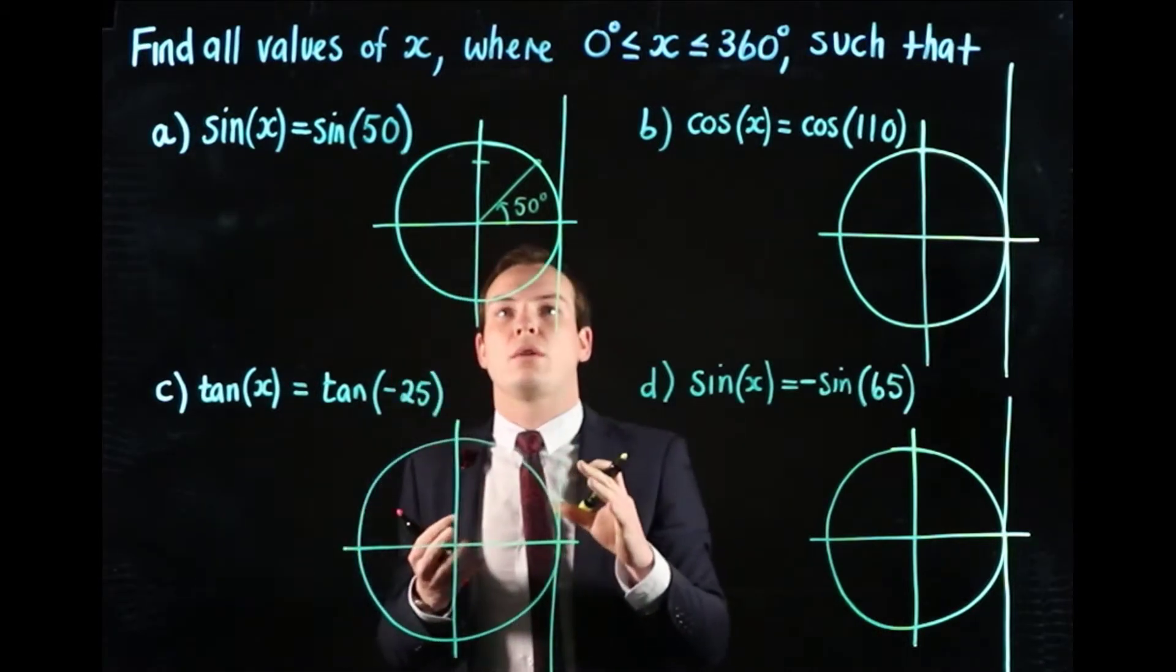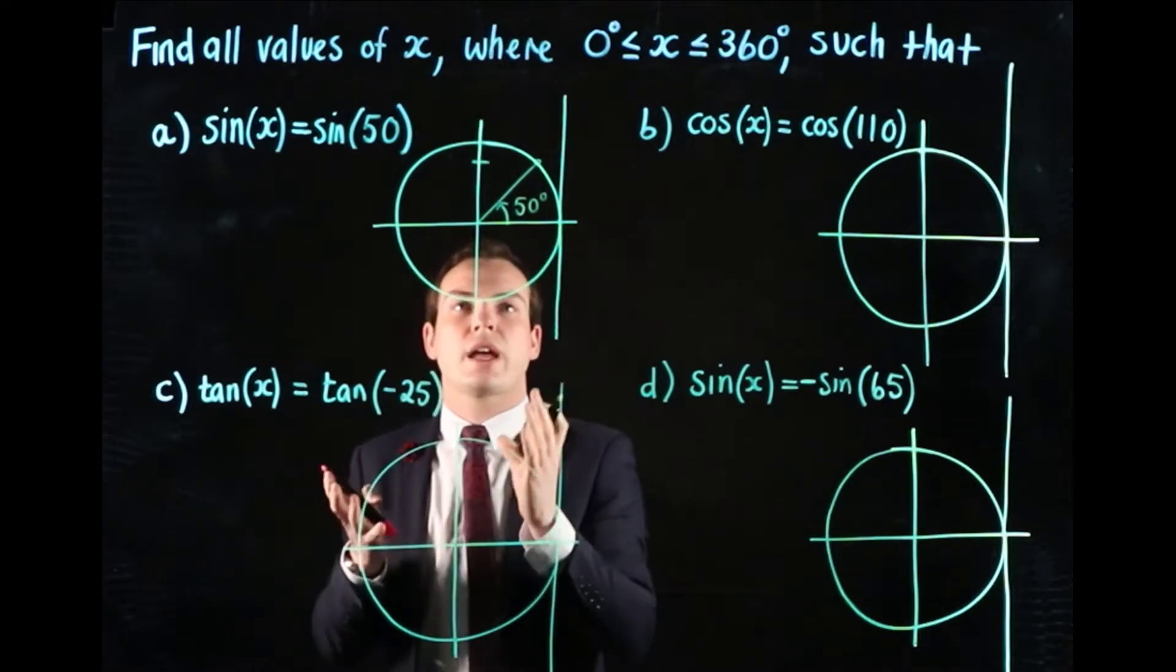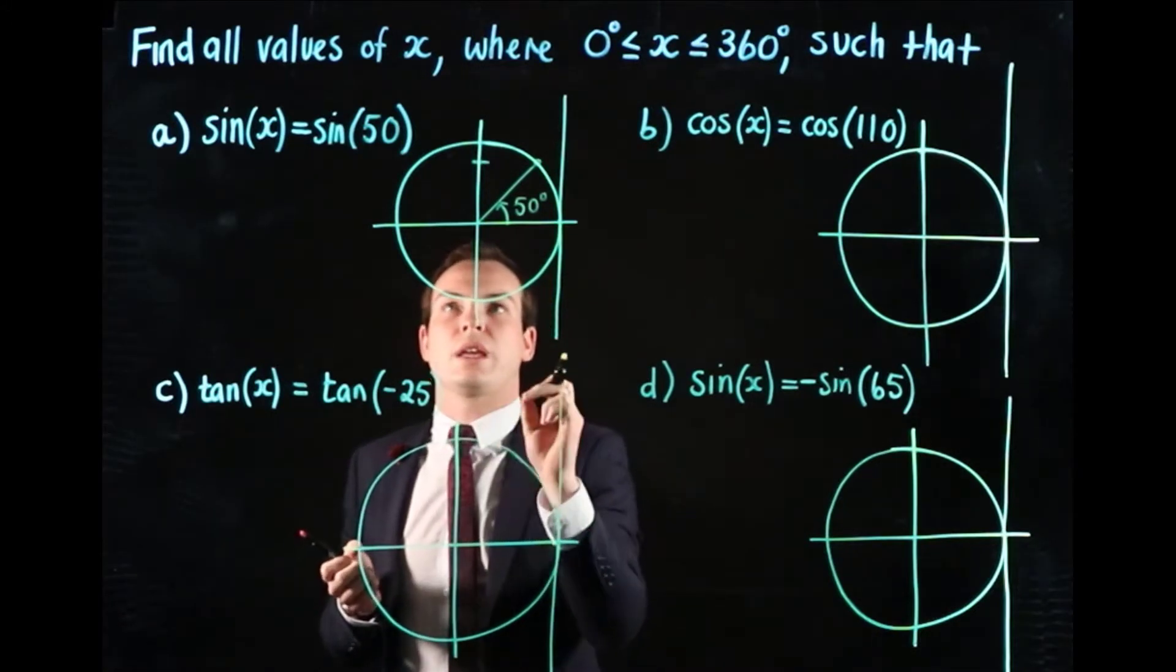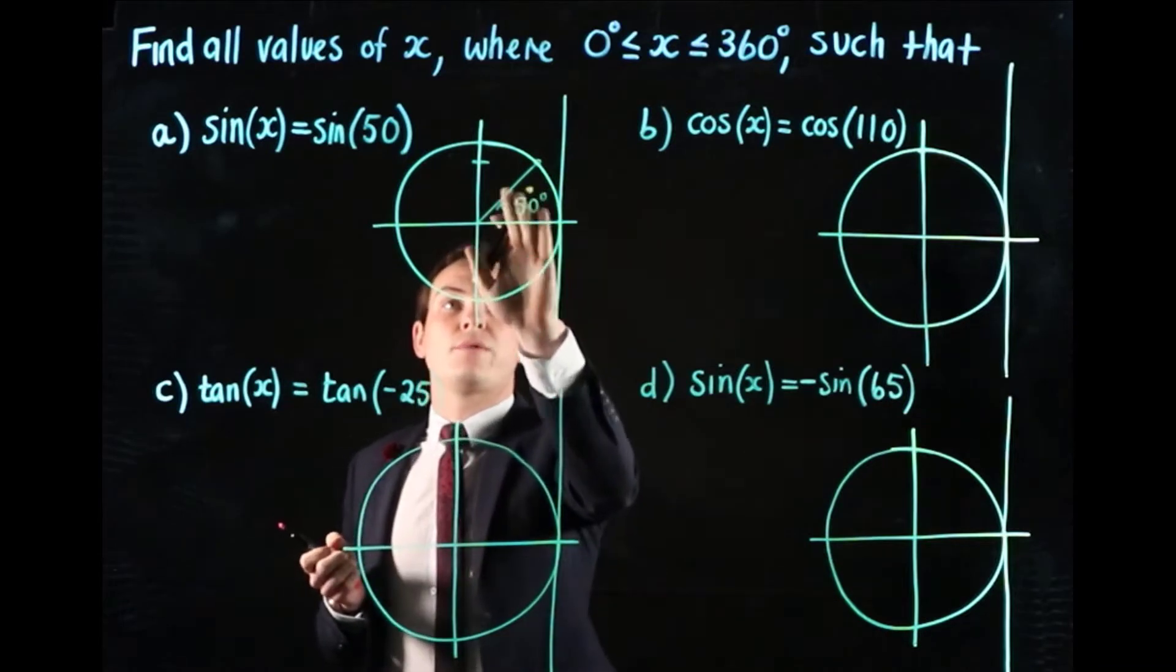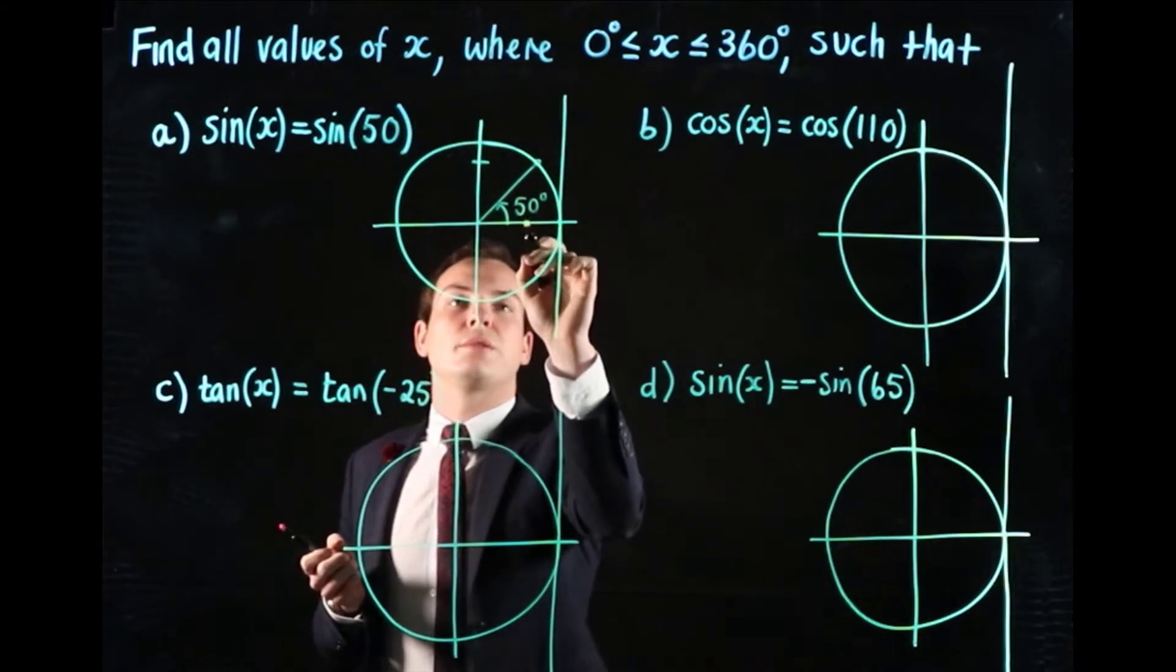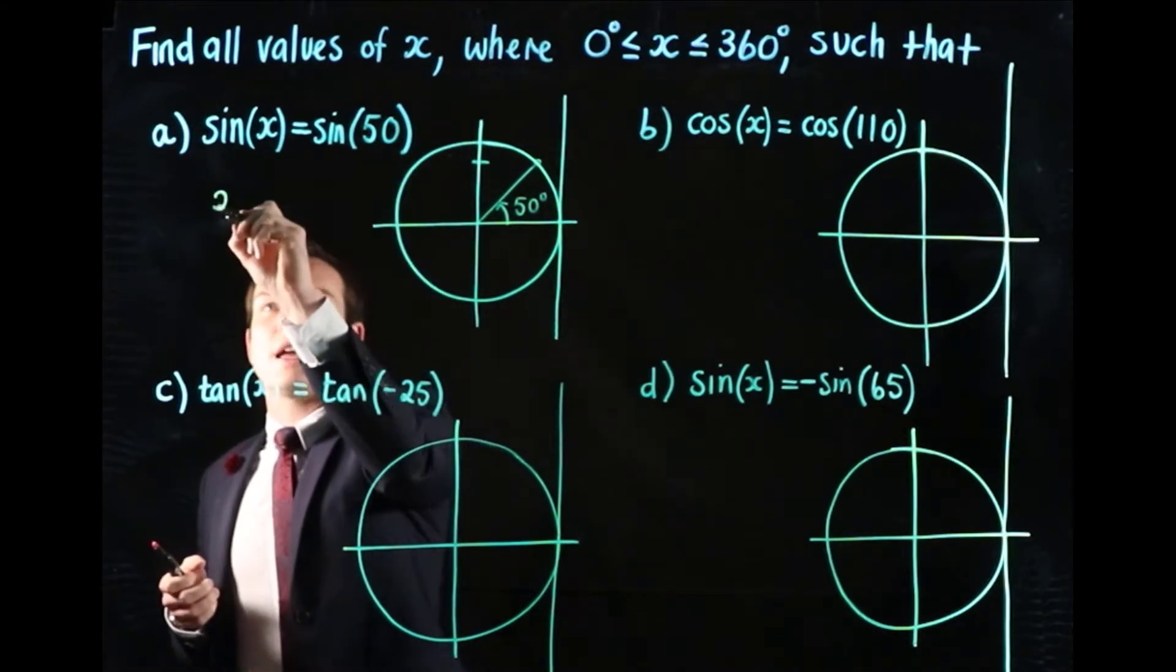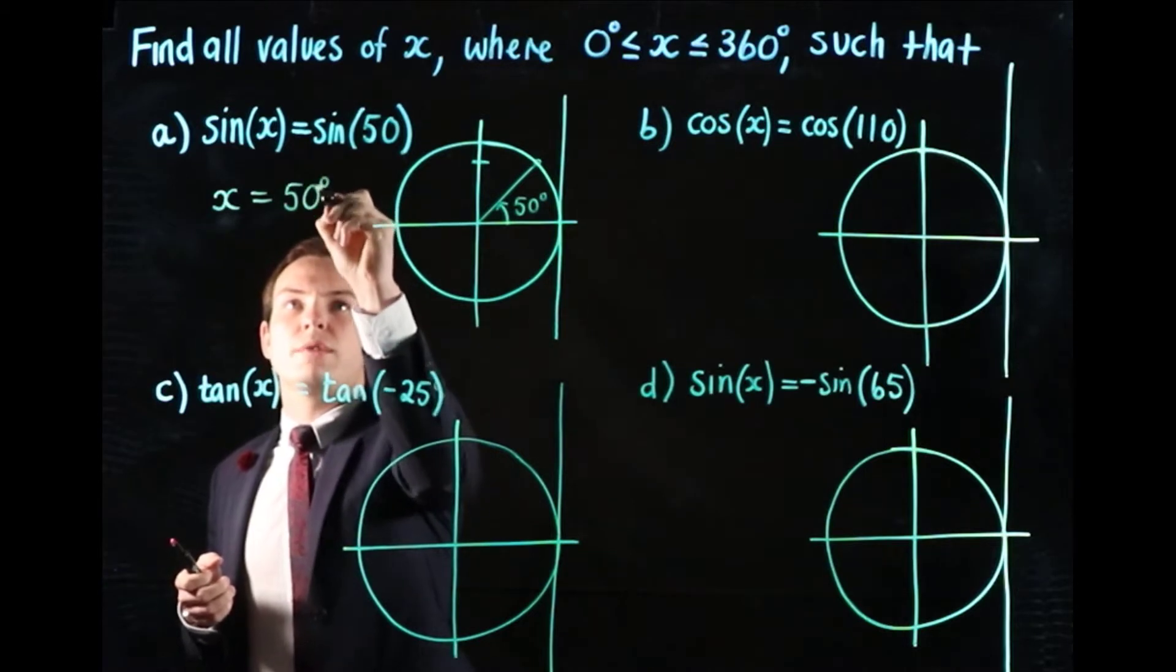Now what we want to do is think about all other angles, that's what x represents, all other angles in this unit circle between 0 and 360 degrees so that we get the sine value equal to sin of 50. We need to be in one of the first two quadrants because that's where sine is positive. So one value of x is already given to us: x equals 50 degrees.